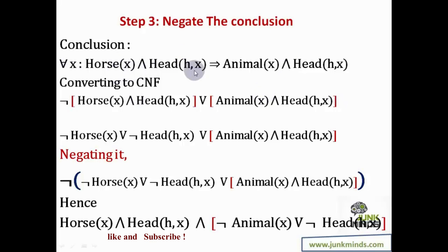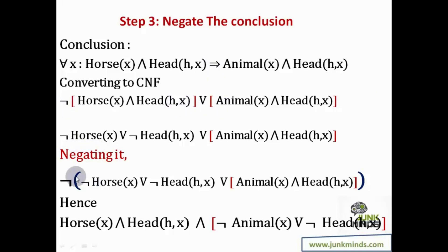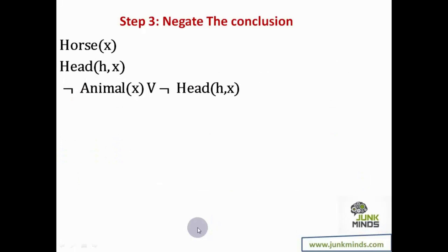In step three: for all X, if X is a horse and H is the head of X, then X is an animal and H is the head of X. Whatever I have in step three I use to start step four as well. In step four, for resolution I strictly need CNF. Converting to CNF — first eliminating the implication, then negating — the negated conclusion comes out. Eliminating the 'and' operator, I end up with three predicates: horse(X), head(H, X), and not animal(X) or not head(H, X). This is the first time we have more than one predicate in step three.